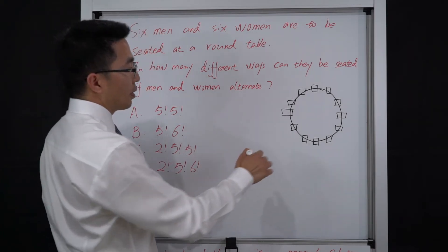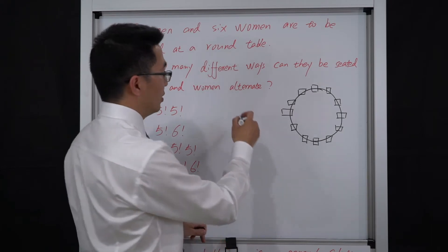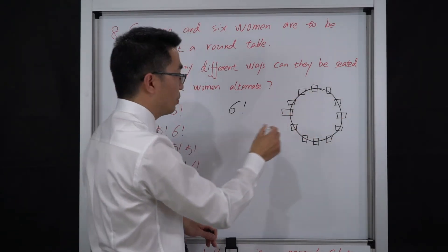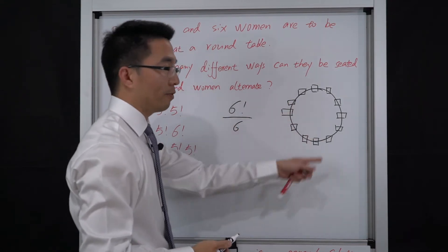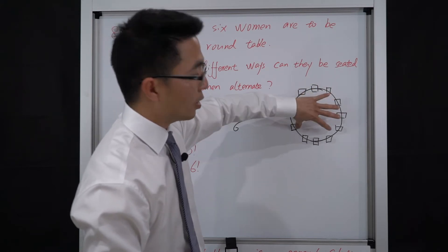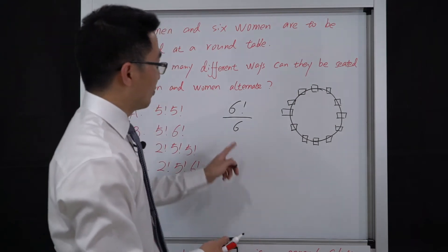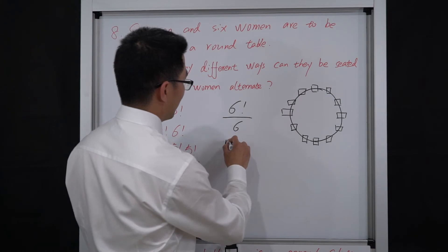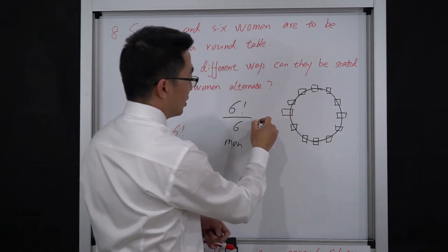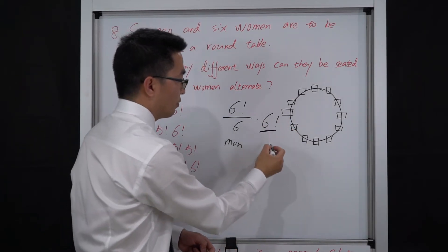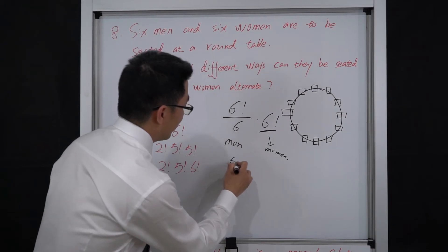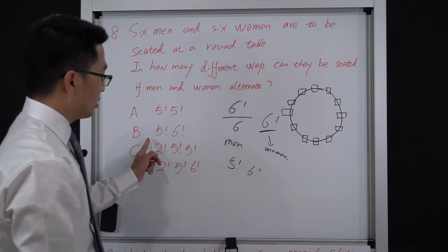Let's consider the men first. We have 6 chairs for men, so the total different arrangements for men is 6 factorial. But we have a circular arrangement, so we divide by 6 to eliminate the overcount — because rotating the table gives the same order. So this gives 5 factorial for the men. Once the men's seats are fixed, the other 6 seats for women can be arranged in 6 factorial ways. So 6 factorial divided by 6 is 5 factorial, times 6 factorial. The answer is B.